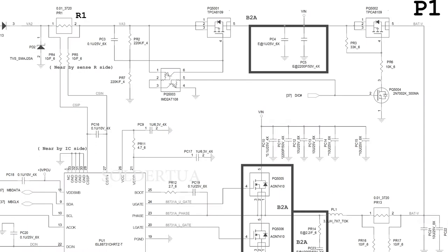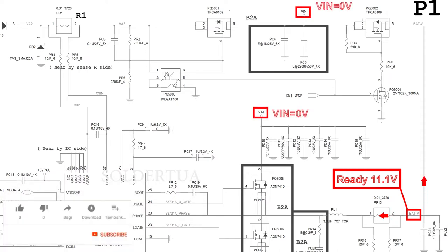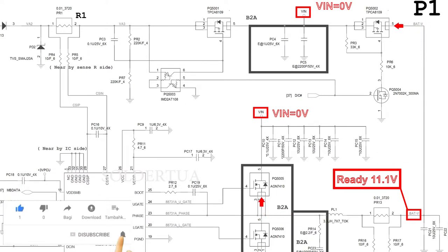When the laptop battery is plugged in, the BATV line will have a voltage of 11.1 volts — this voltage comes from the battery. Because there is no voltage on the VIN line, electric current will flow to the drain pin of MOSFET PQ5002 and the source pin of MOSFET PQ5005.